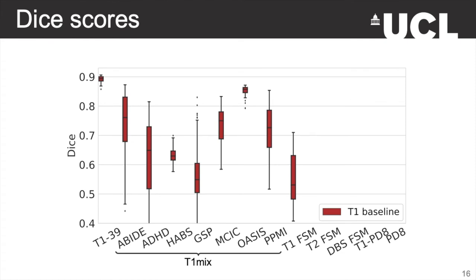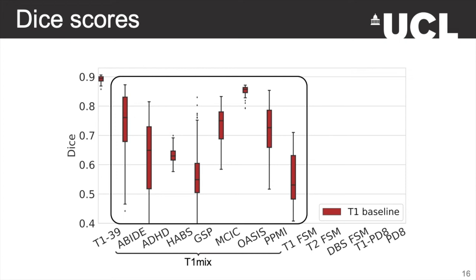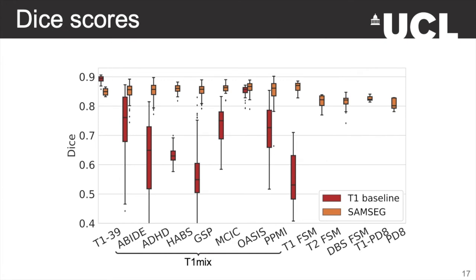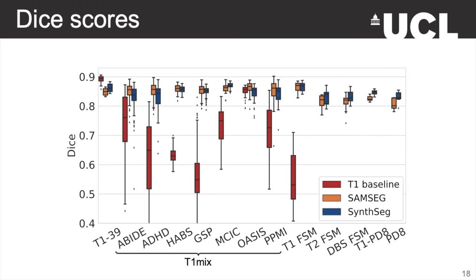We now report the Dice scores obtained by the competing methods — higher is better. The T1 baseline obtains really good scores for images similar to its training data. However, the results fluctuate a lot when tested against scans of slightly different intensity distributions, even though these scans are still T1 and even with aggressive data augmentation. The T1 baseline also couldn't be applied to skull-stripped data or any non-T1 modalities. In comparison, SynthSeg does very well for all datasets and is much more consistent than the T1 baseline. It is modality-agnostic and can segment skull-stripped data. SynthSeg obtained similar scores to SAMSEG — sometimes a bit higher, sometimes a bit lower — but for non-T1 modalities, SynthSeg consistently outperformed SAMSEG while running three orders of magnitude faster.